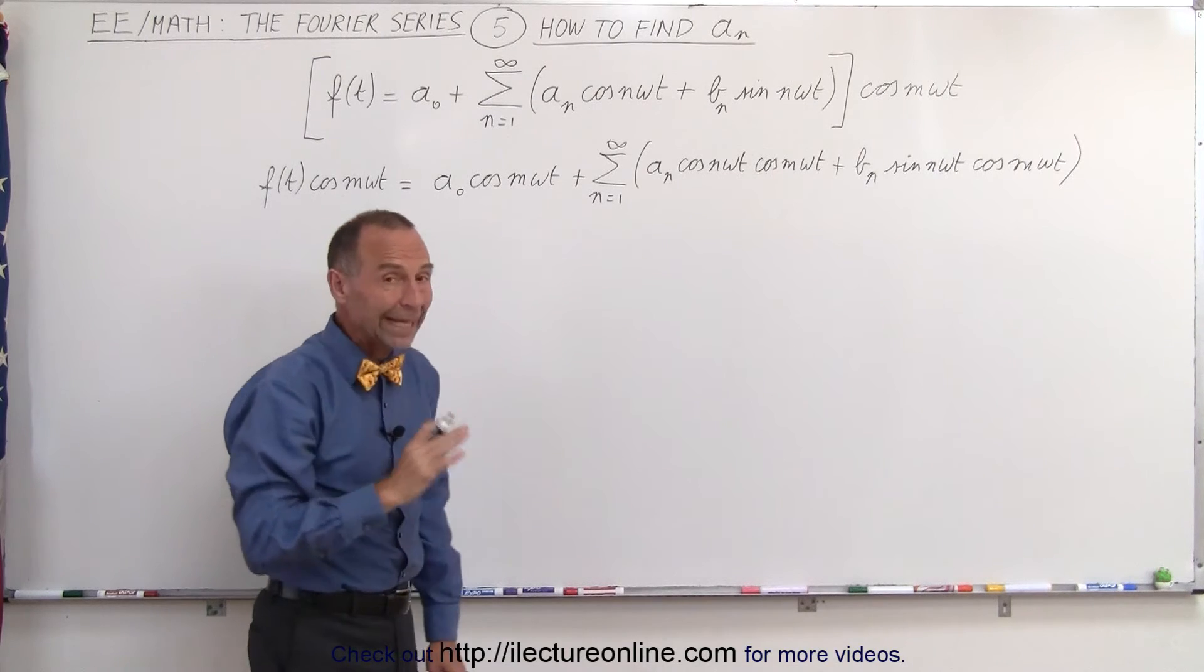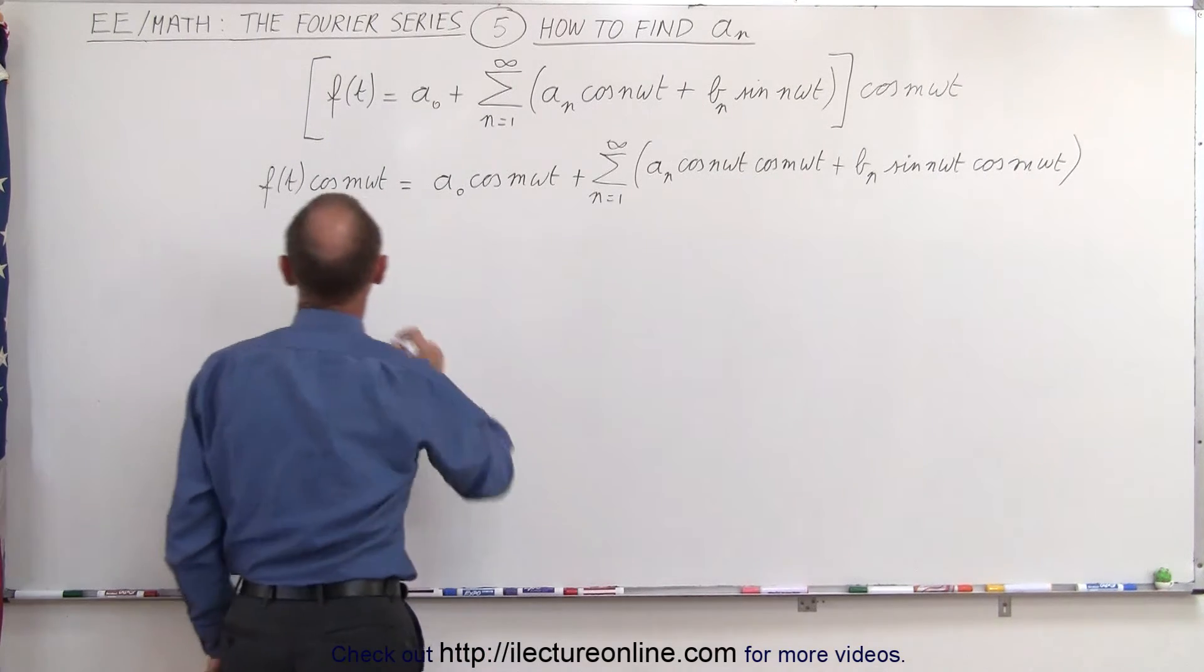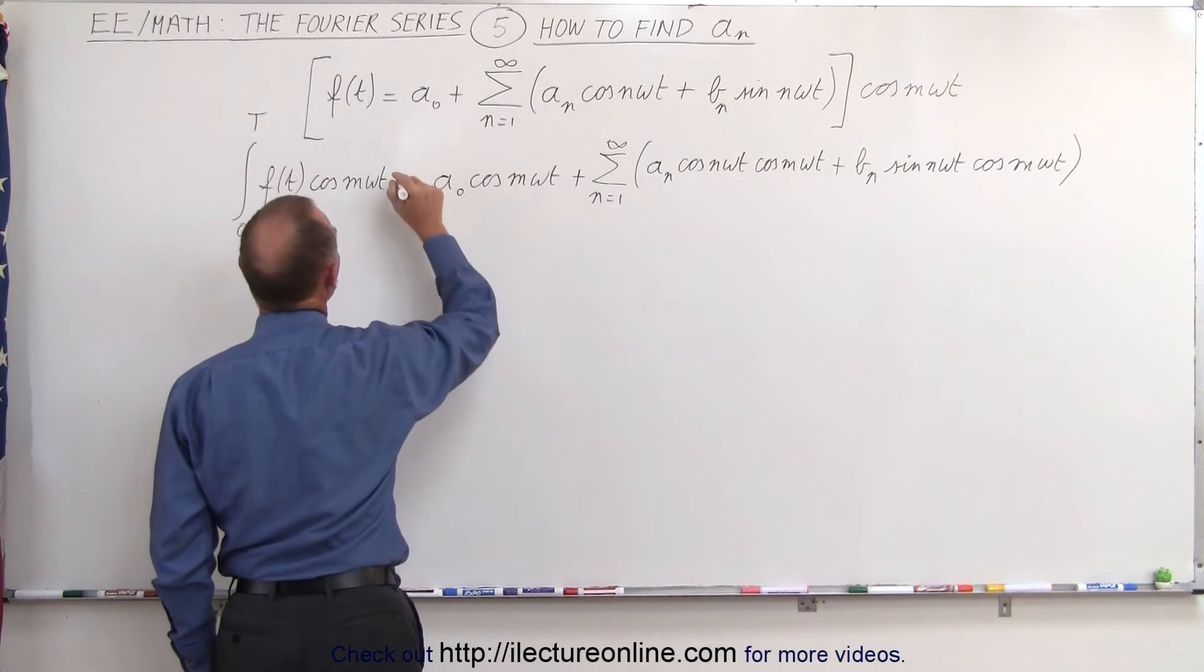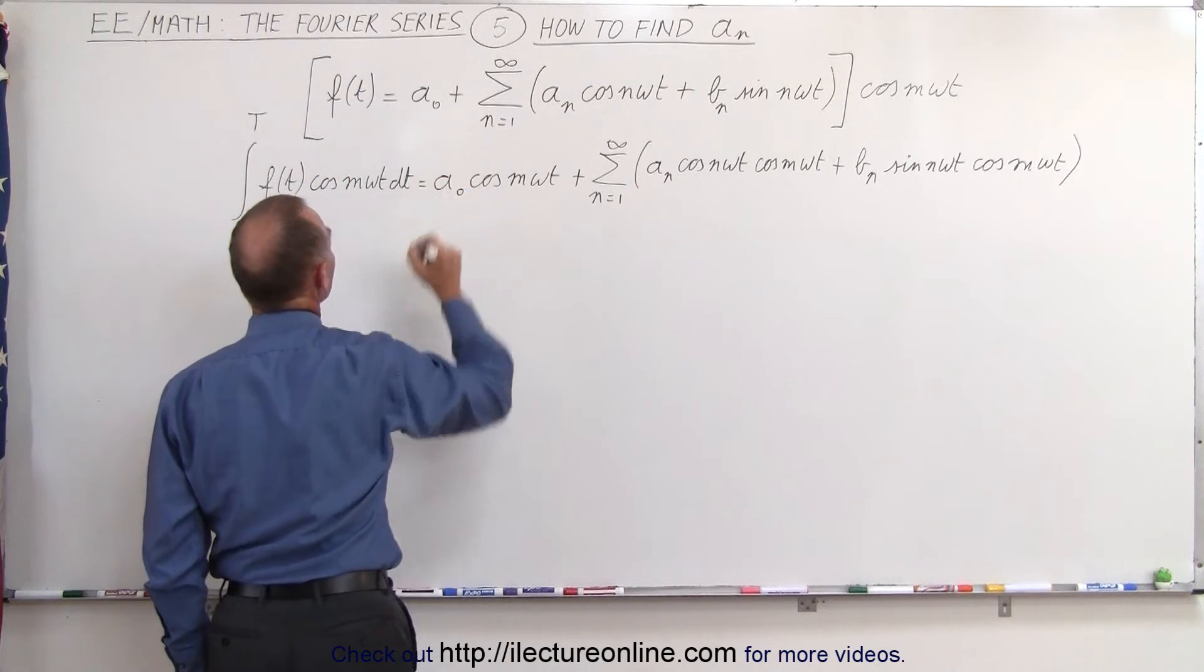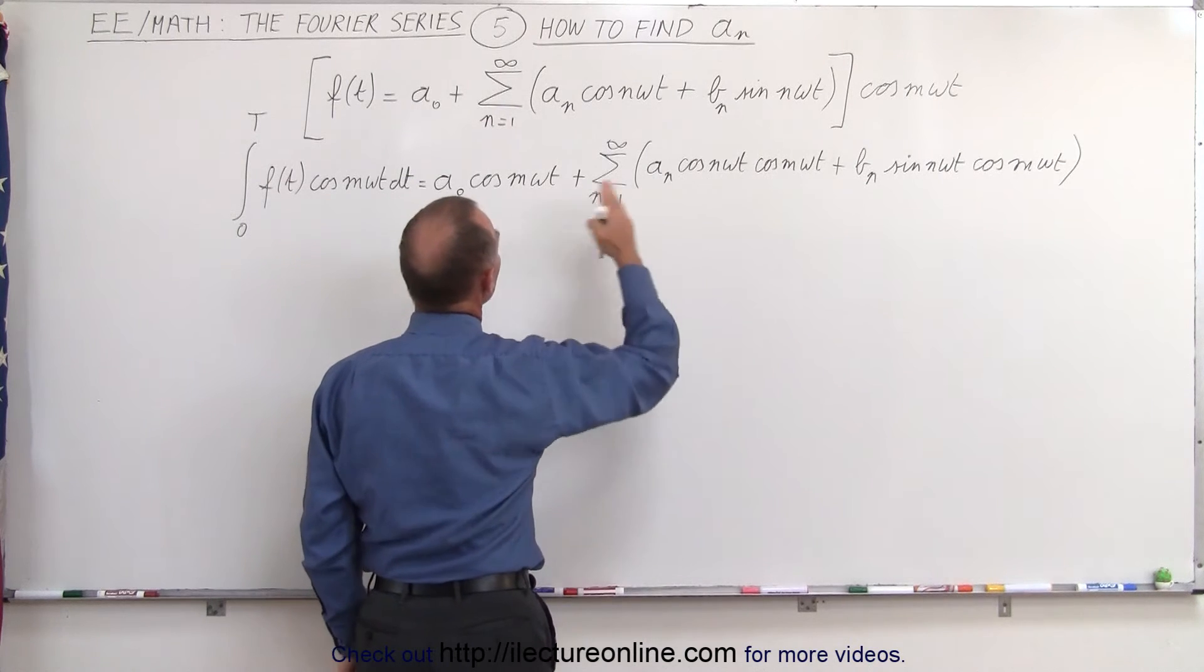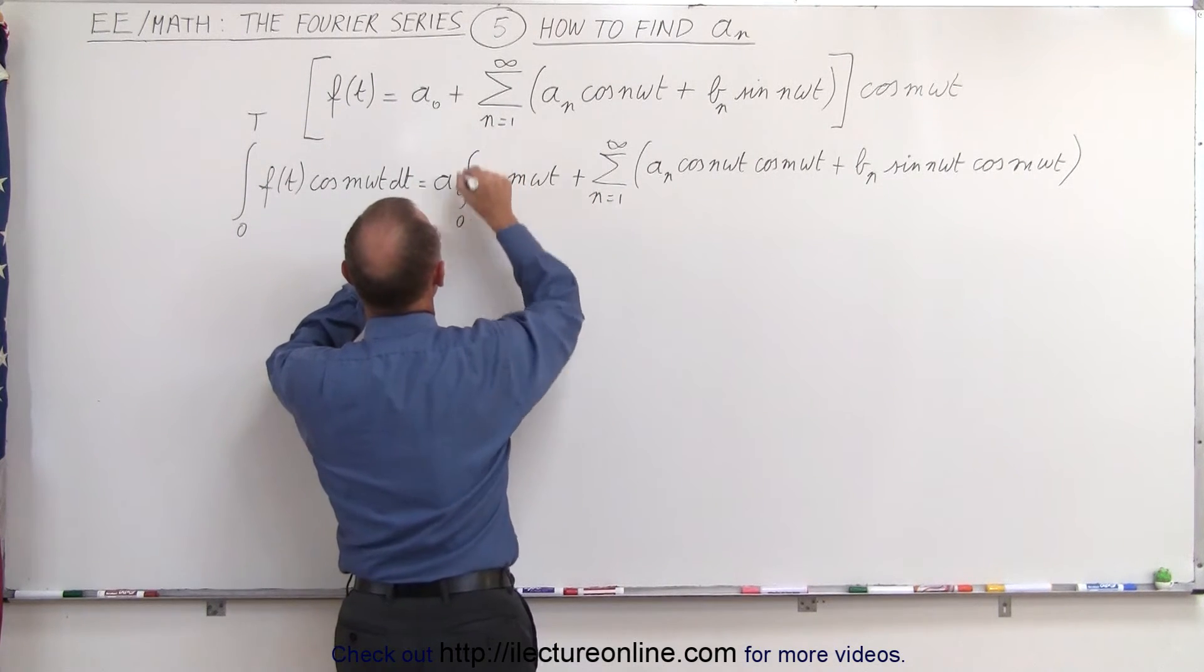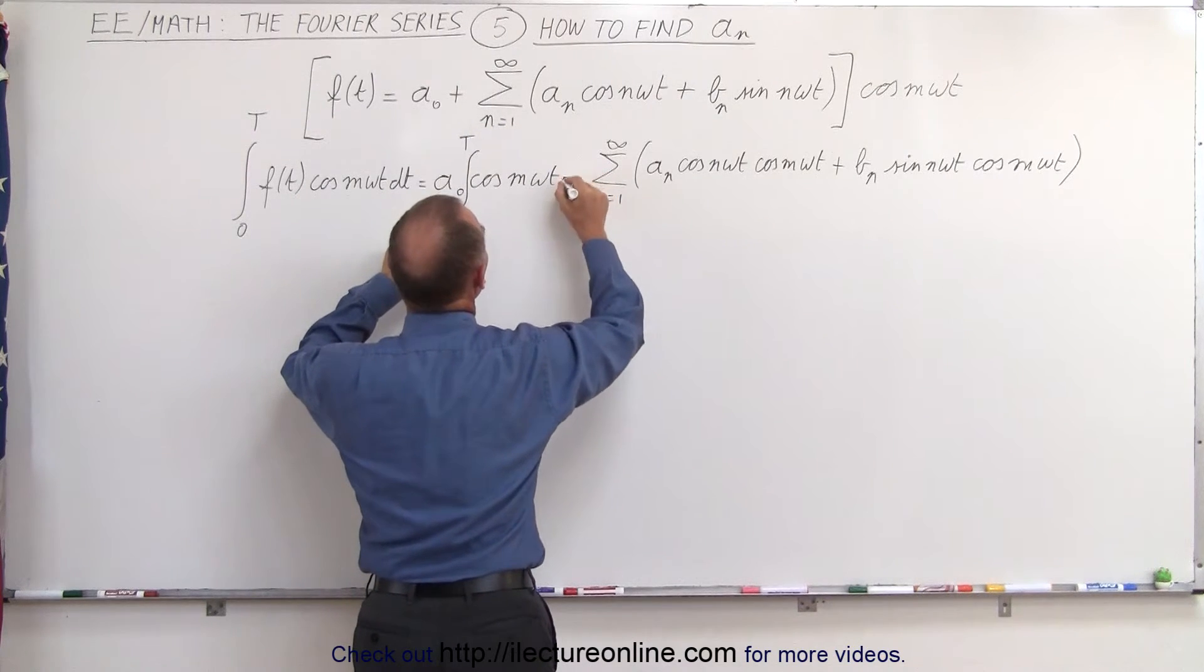Now what we're going to do is we're going to integrate both sides of the equation. We're going to integrate the left side from 0 to t, and of course that means we're going to need a dt here. And we're going to integrate the right side. Now of course we're going to integrate this. So integrate this from 0 to t, which means we're going to need a dt as well.